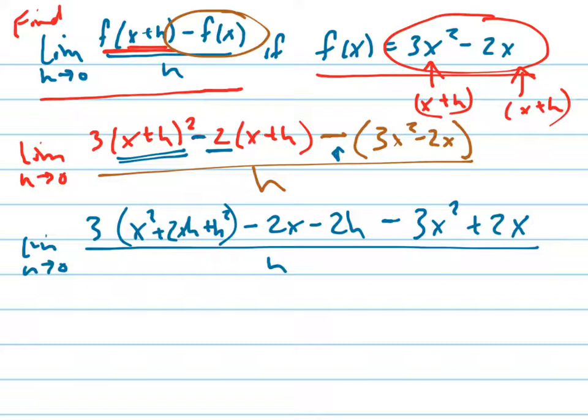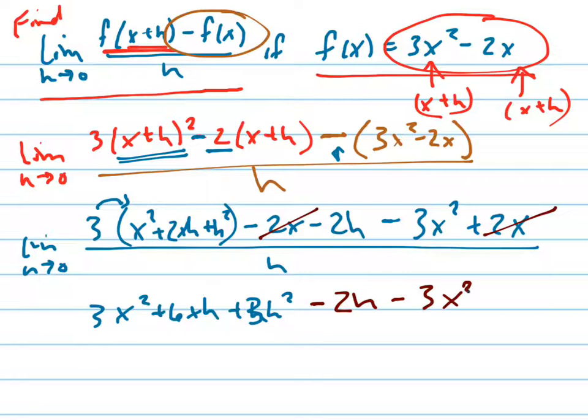So now let's distribute this in. That becomes 3x² + 6xh + 3h². Notice what happens with these things right here—that positive and that negative cancel out. So I'm going to have -2h - 3x² still. That and that are going to cancel out.